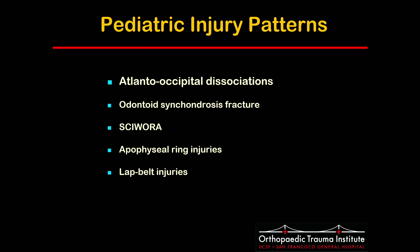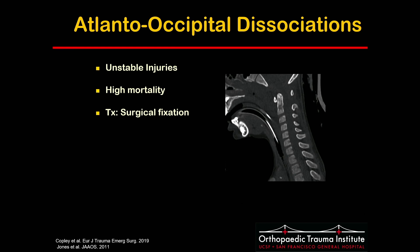Moving on to specific cervical injury patterns in children, I will begin with atlantooccipital dissociations. These are highly unstable injuries with mortality rates up to 50%, particularly if the injury is missed initially. In the past, we had very little data about these injuries because most of these patients simply did not make it to the hospital alive.